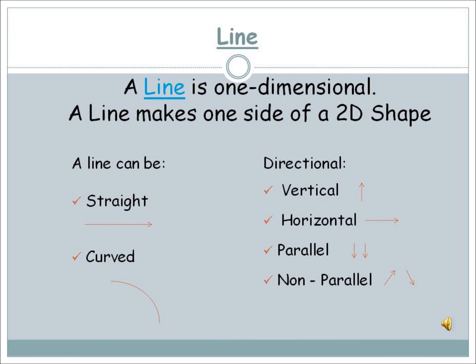A line is one dimensional. A line makes one side of a 2D shape. A line can be straight or curved. It is also directional. It can be vertical, horizontal, parallel or non-parallel.